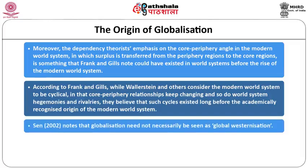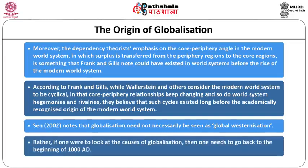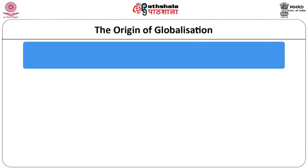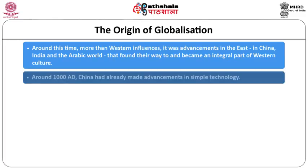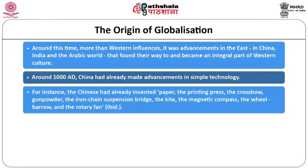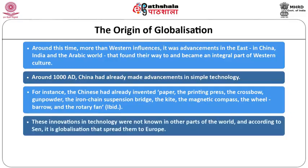Sen notes that globalization need not necessarily be global westernization. Around 1000 AD, it was advancements from China, India, and the Arabic world that found their way westward. China had already made advances in technology — crossbow, gunpowder, the iron chain suspension bridge, the kite, the magnetic compass, wheelbarrow, and the rotary fan. According to Sen, it was globalization that led to their spread in Europe.